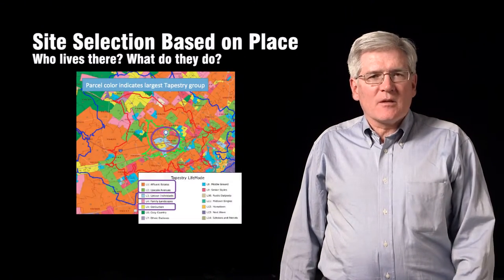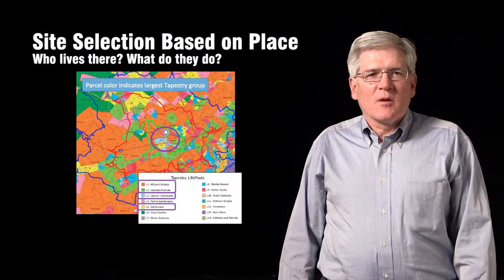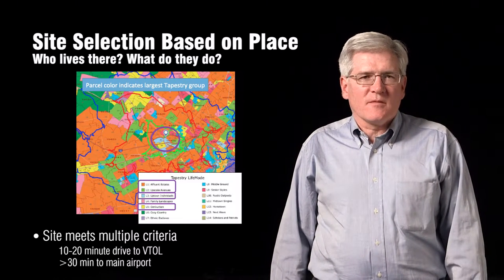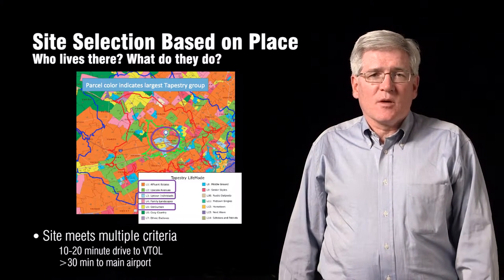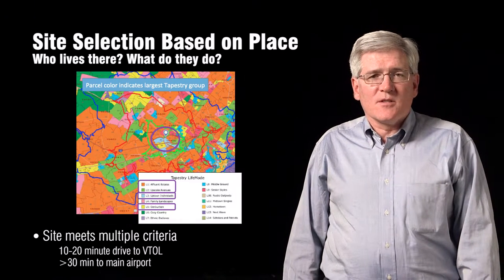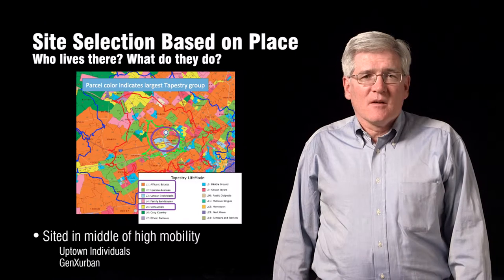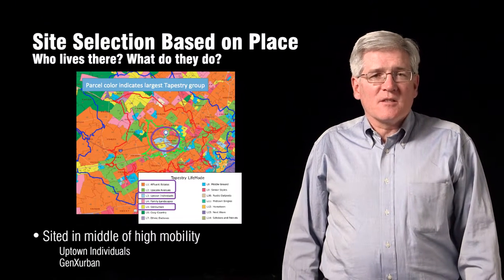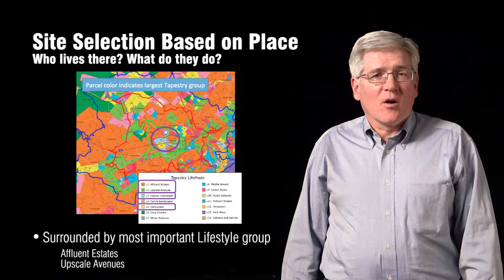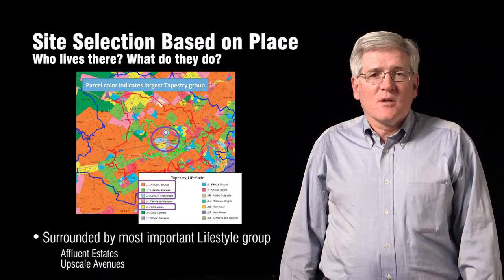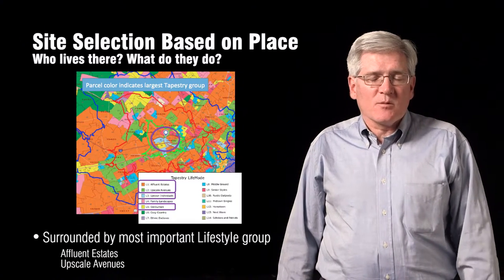As we hone in, I picked one spot in the center of that region. I'm looking in particular for short driving times — 10 minutes or so — and in particular who lives in this region. The blue and yellow colored regions are the highly mobile people: the uptown individuals and Gen X urban from the Tapestry dataset. They would probably be most interested in having this kind of air mobility right in their neighborhood. More interesting are the green and orange segments in the surrounding areas — folks who have 10 to 20 minute drive times to such a location, and this is the population we're very interested in.